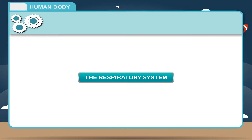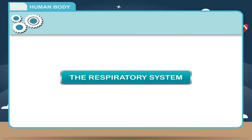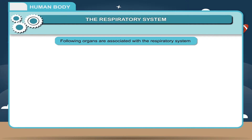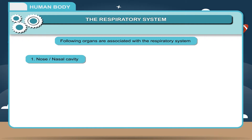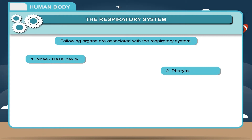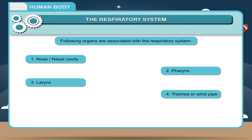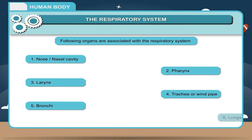The Respiratory System. The following organs are associated with the respiratory system: 1. Nose or nasal cavity, 2. Pharynx, 3. Larynx, 4. Trachea or windpipe, 5. Bronchi, 6. Lungs.